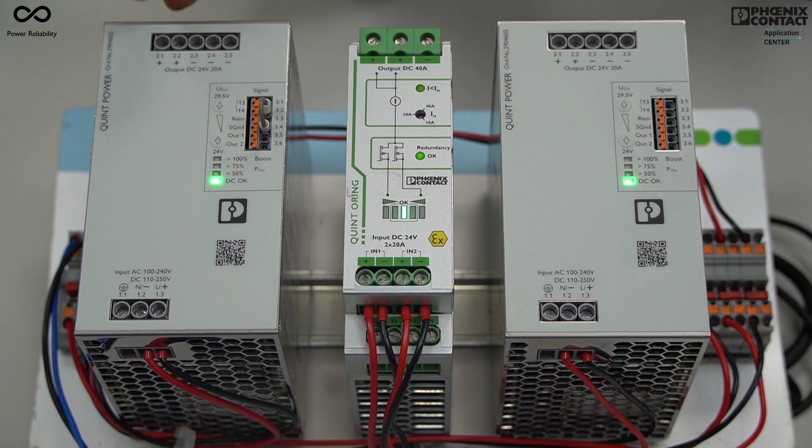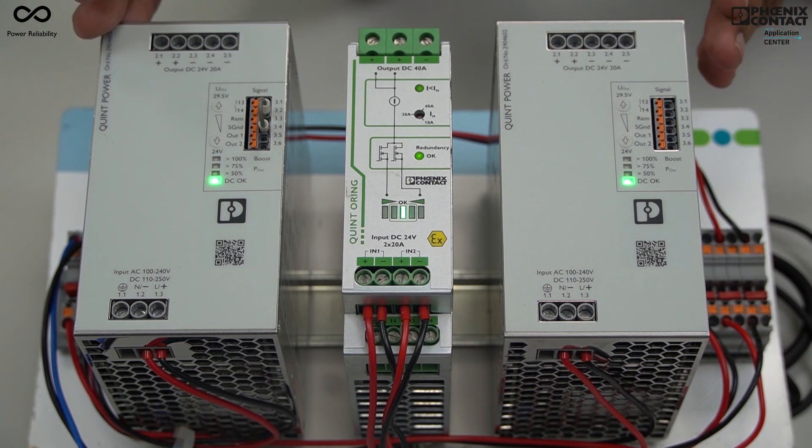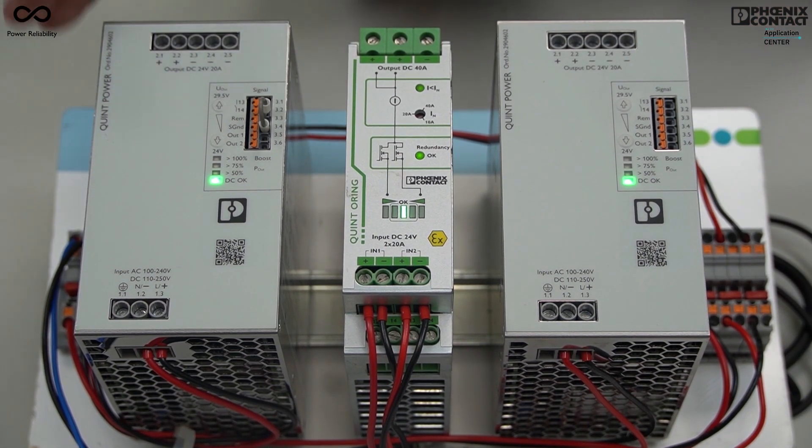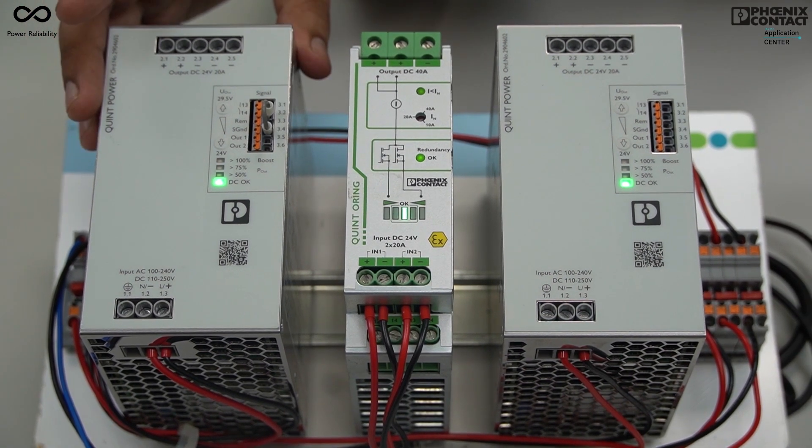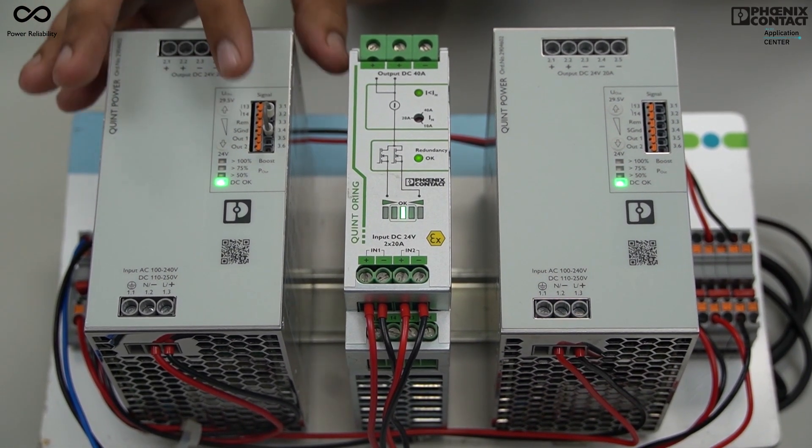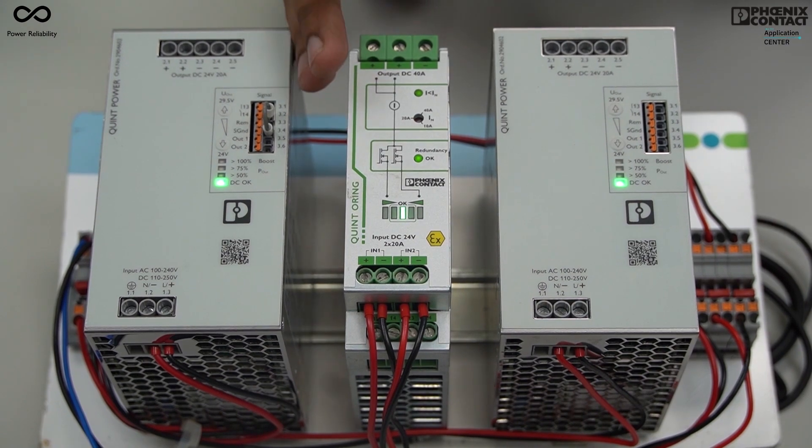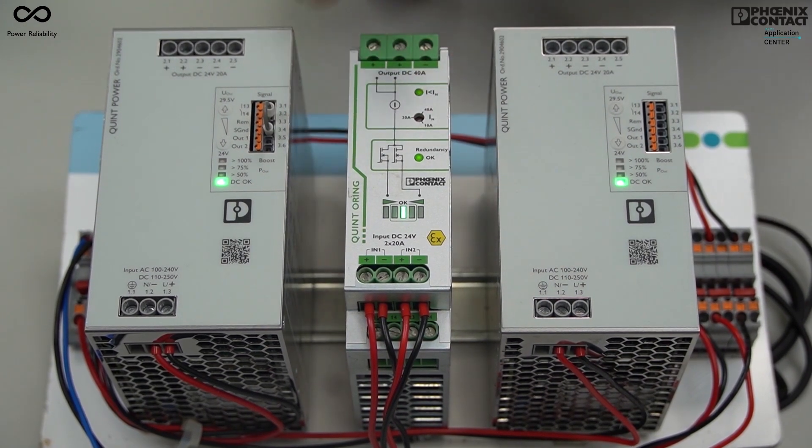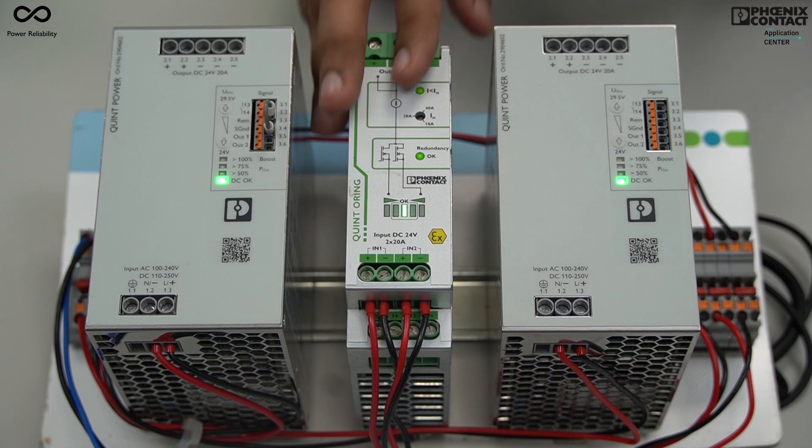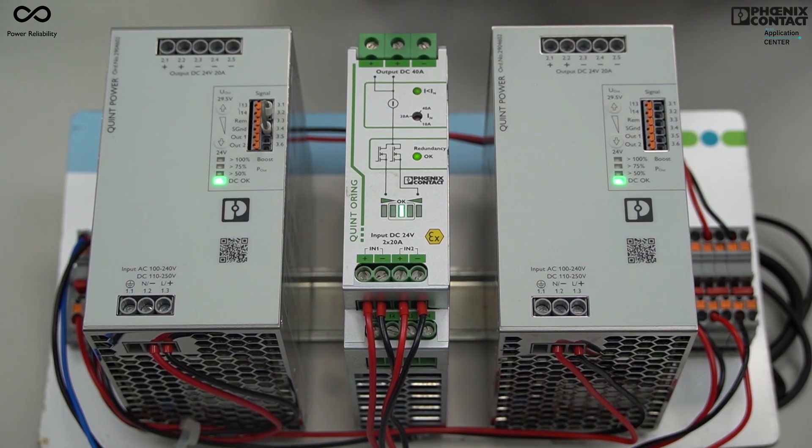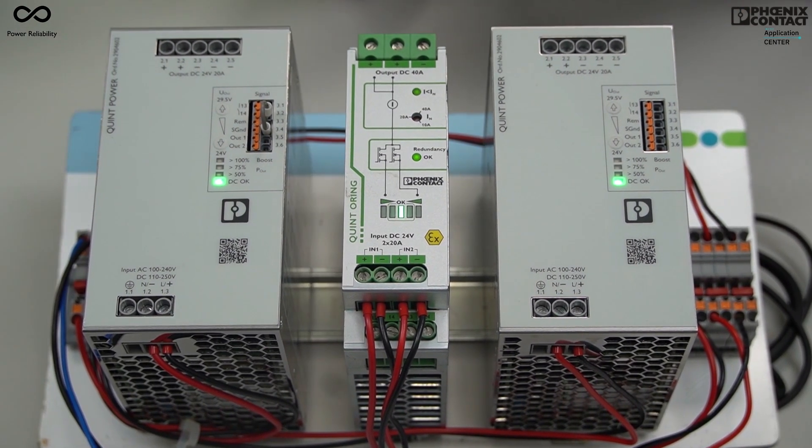Now we will create a faulty condition in this redundant system. We will short the first power supply and switch it off remotely, and then you can see you will get the indication from the power supply as well as the redundancy module while your uninterrupted load will continue working.